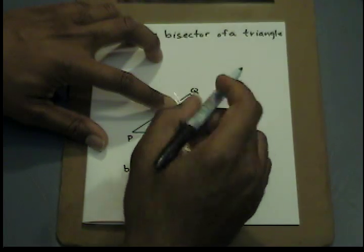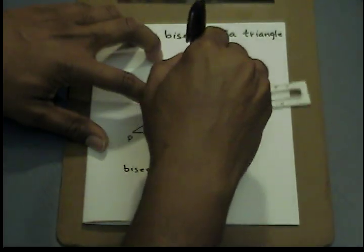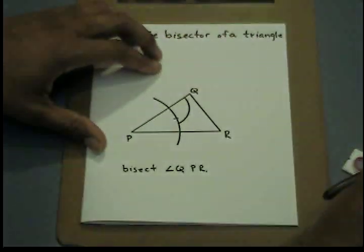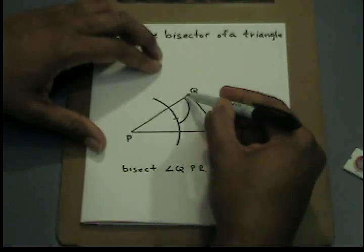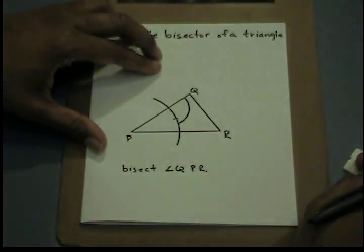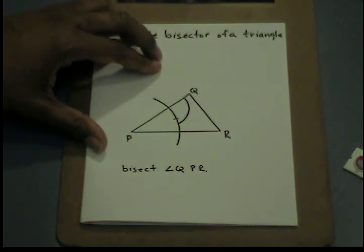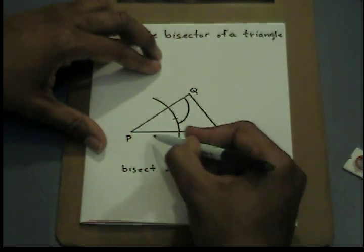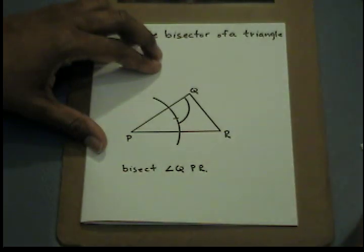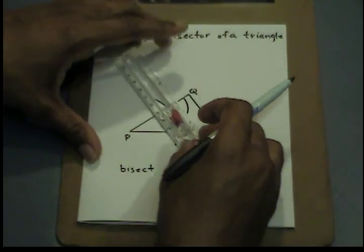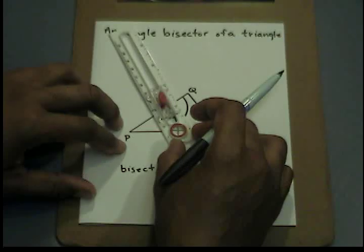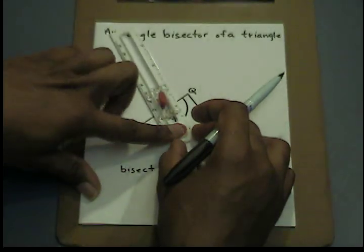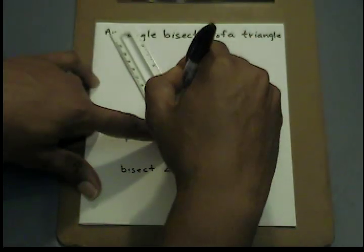Next, I'm going to place the rotating end without unlocking it on the next point where the arc intersected PR. I'm going to create an identical arc intersecting the first that I just created.